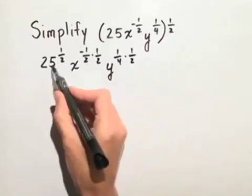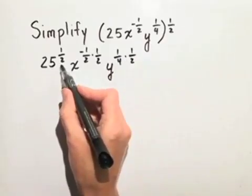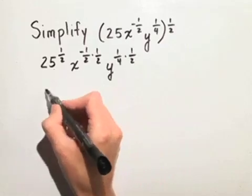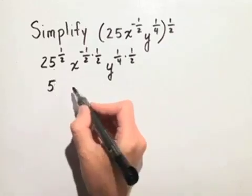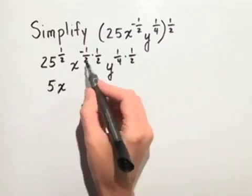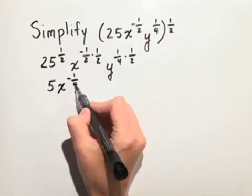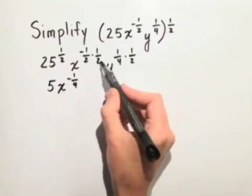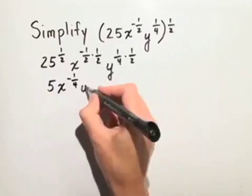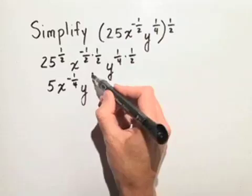Now we'll simplify. 25 to the 1 half power really means the square root of 25, which is just 5. x to the negative 1 half times positive 1 half gives us negative 1 fourth. We just multiplied numerators and denominators, times y to the 1 eighth.